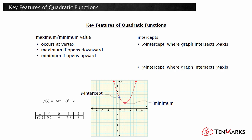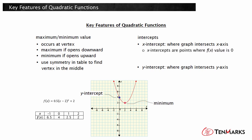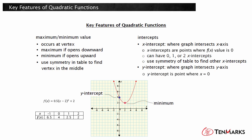Remember that quadratic functions are symmetric about a vertical line through the vertex. So, in a table, the vertex will occur in the middle of the symmetrical points in the table. X intercepts are points where the function value is zero. Quadratics can have zero, one, or two x-intercepts. If only one x-intercept is shown in the table and it does not occur at the vertex, use the symmetry of the function to determine the other x-intercept. The y-intercept is a point with an x-value of zero.